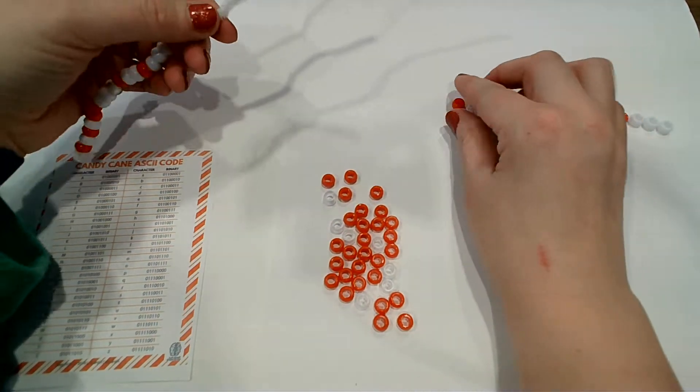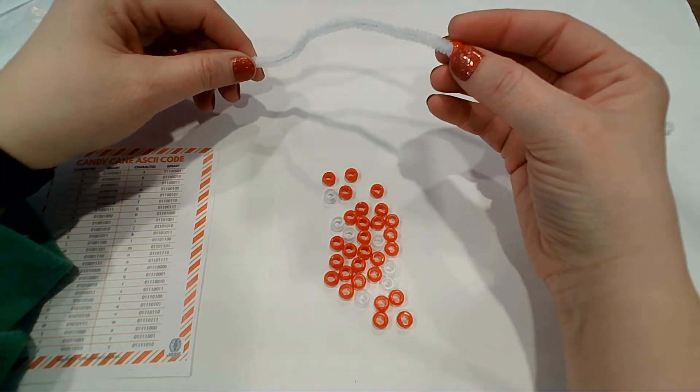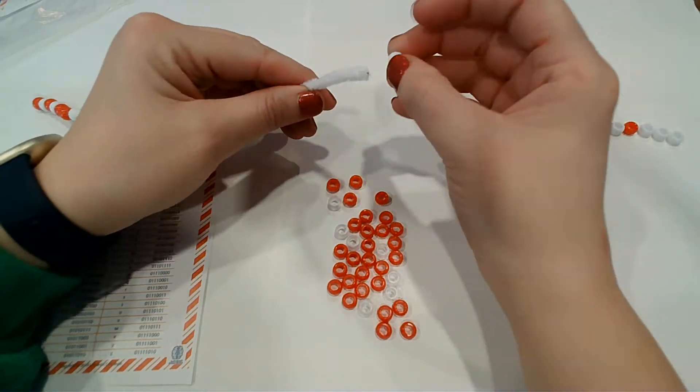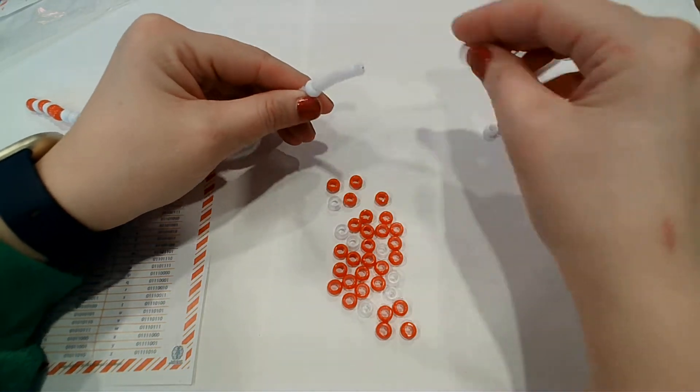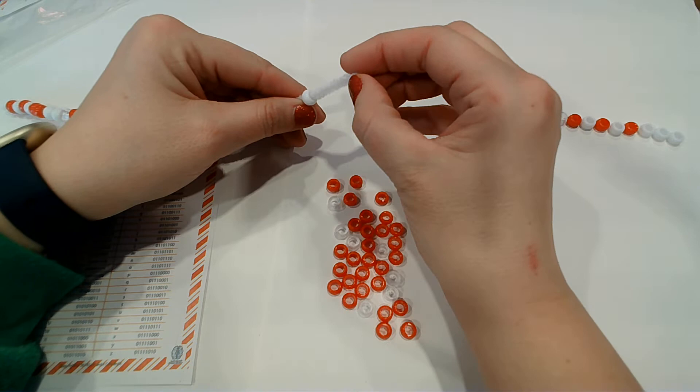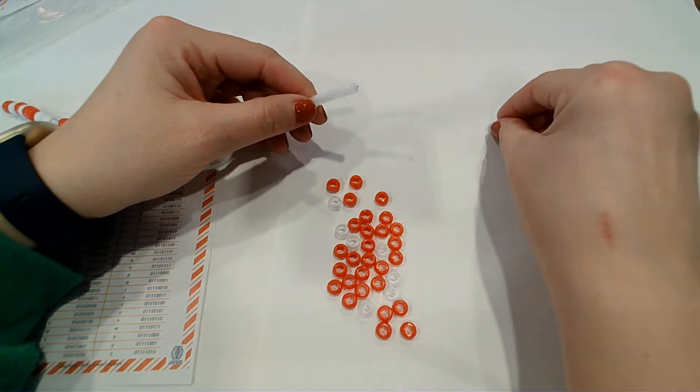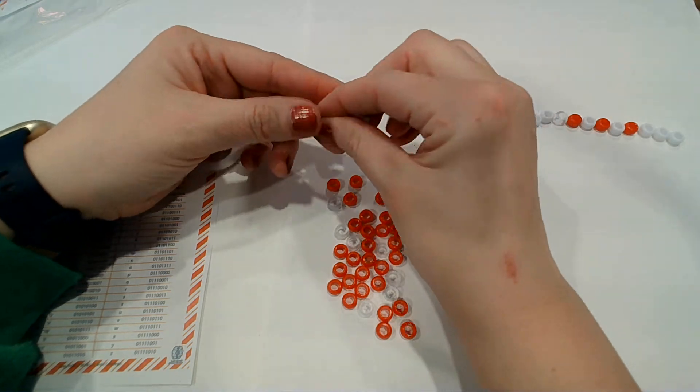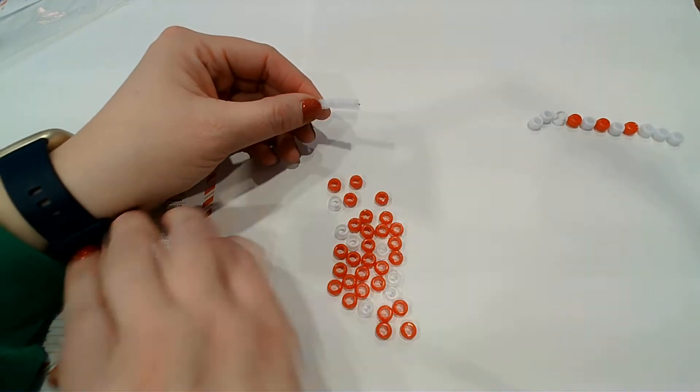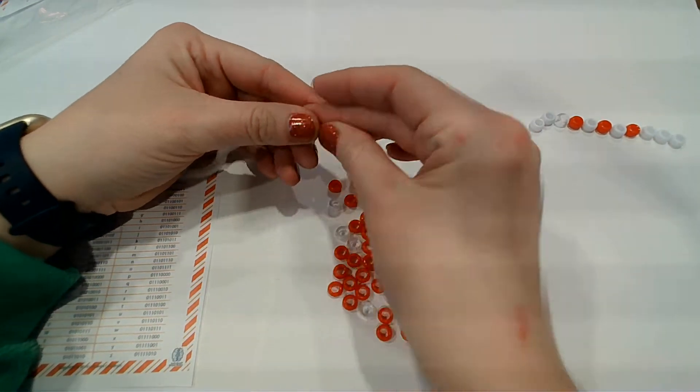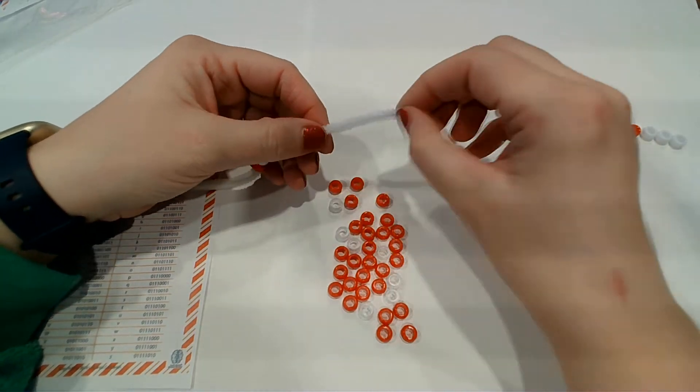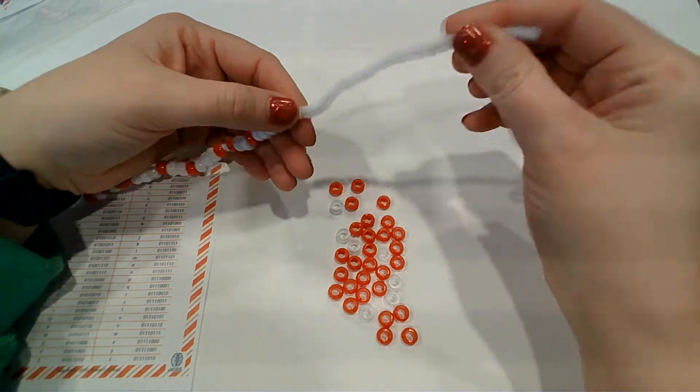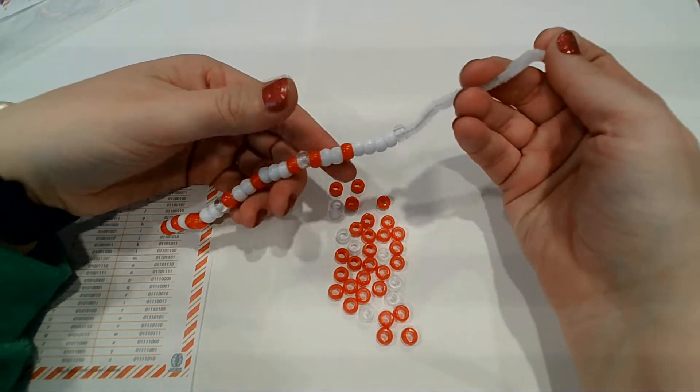And now we're going to do our lowercase O. Zero, one, one, one, zero, one, one, one. Space. And now we have S, N, O.